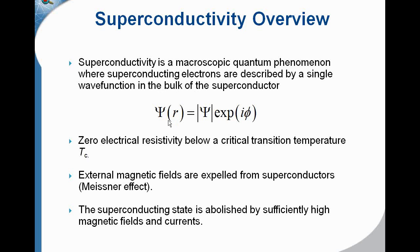Here Psi of R is the superconducting wave function of condensed Cooper pair electrons. And another characteristic of superconductivity is we have zero electrical resistivity below a critical transition temperature T sub C.